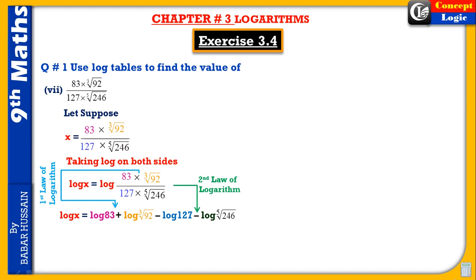If there are index logs, we will first change them to exponent form: log 83 plus (1/3) log 92 minus log 127 minus (1/5) log 246. This is the radical form converted to exponent form.